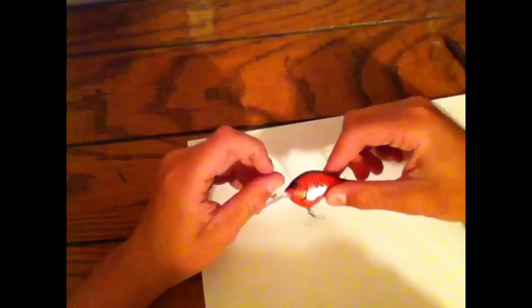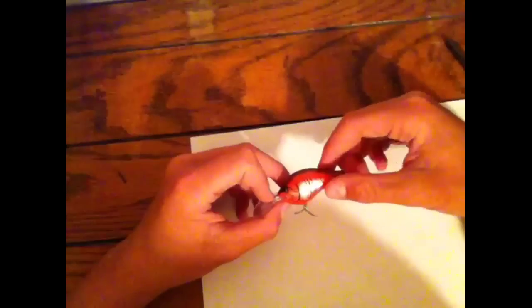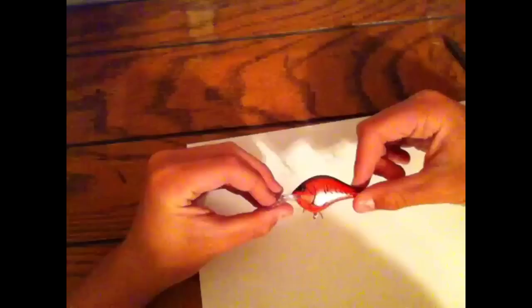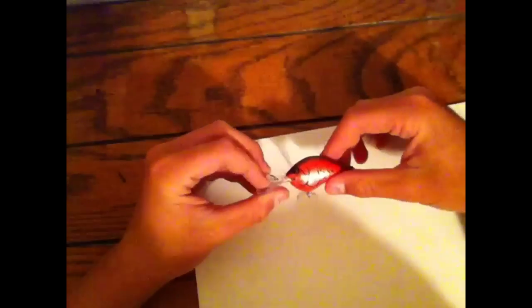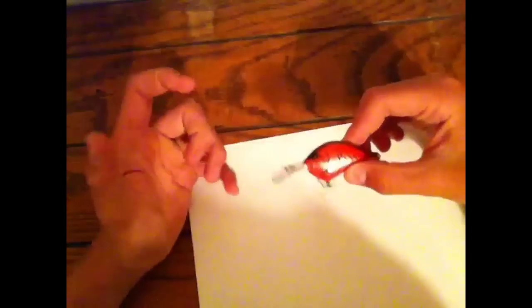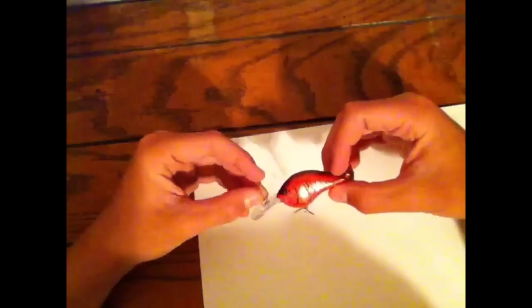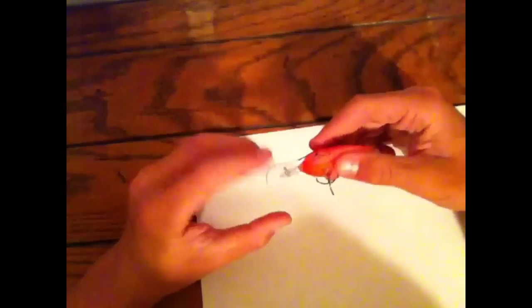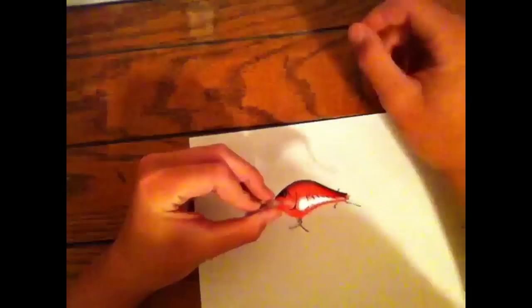Some crankbaits are hard plastic so you can really create reaction strikes and bounce them off cover. Now, you could do this with this, but this will take scratches a little easier and is not quite as durable as harder crankbaits, which is why sometimes I like using other crankbaits if I'm fishing really around rocks or trying to chug along the bottom with a crankbait. But this bait does bounce off cover very well even though it's not a squarebill. You can run it through cover. This is a very dependable bait.